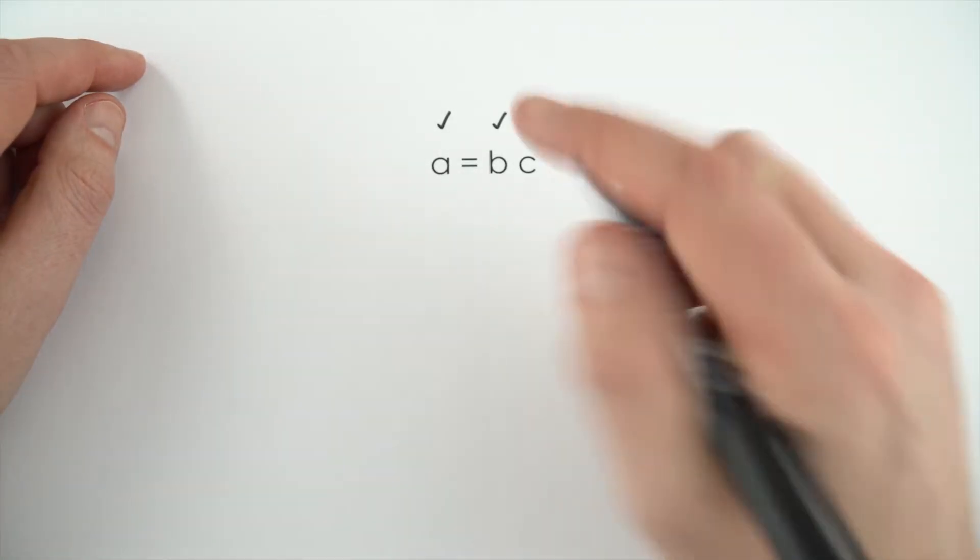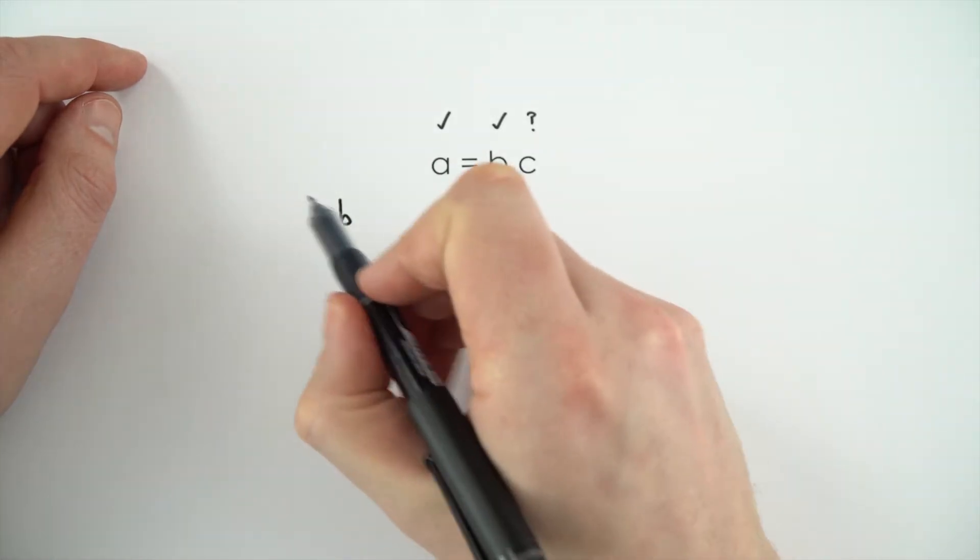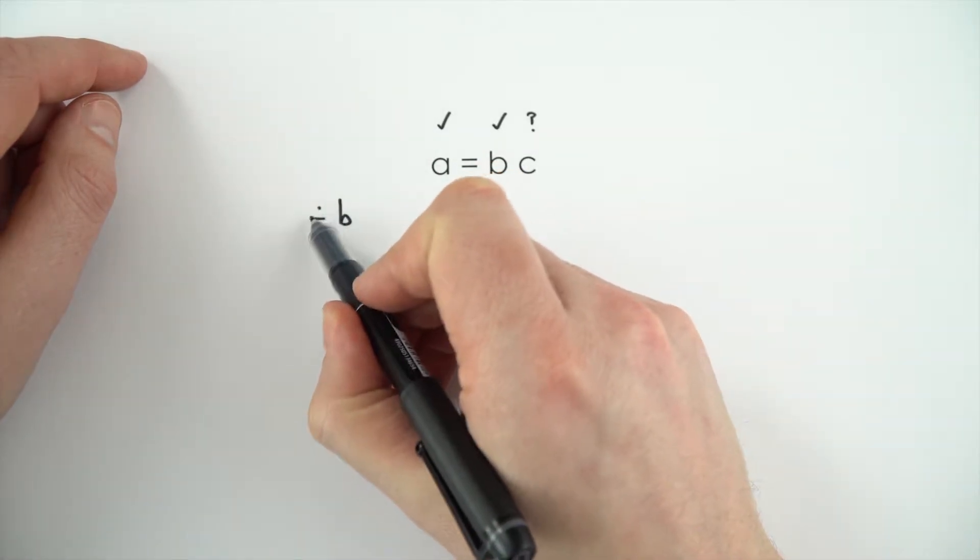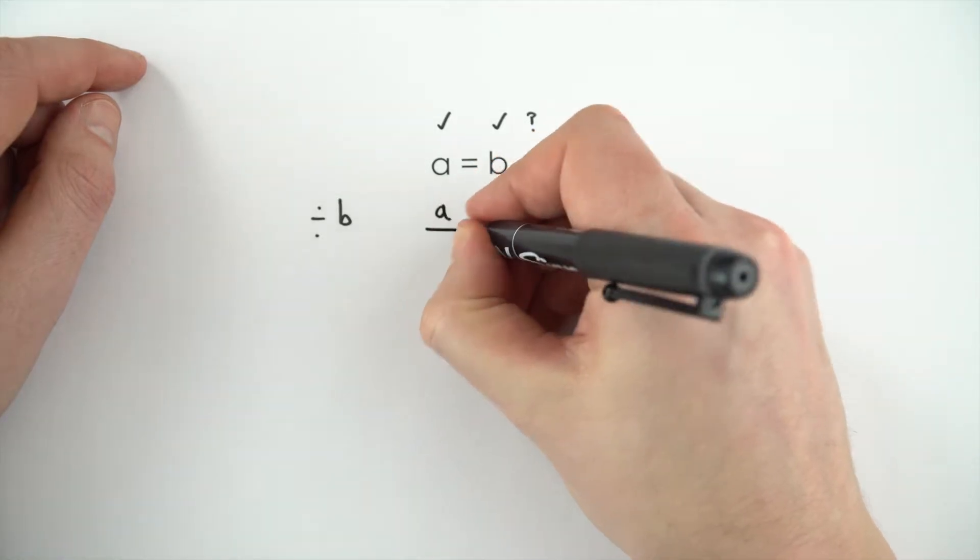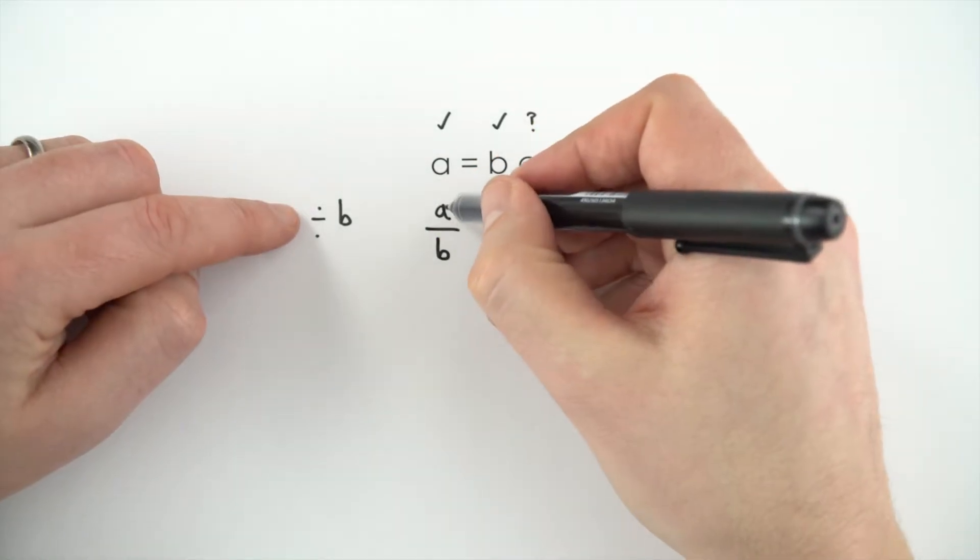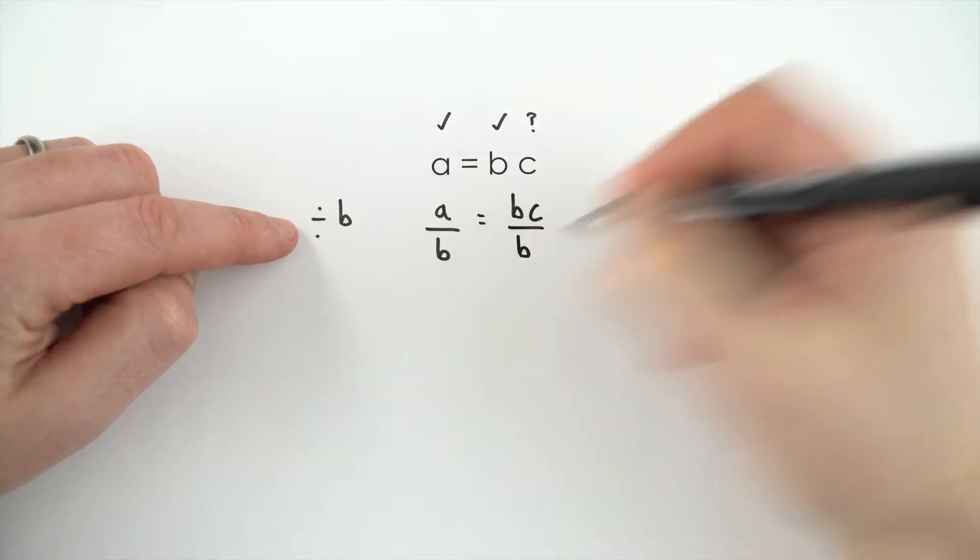So the first thing we're going to do is we're going to divide everything by b. Now the divide sign, you've got like a dot over another dot, and that's the same as saying a over b. So this is just another way of writing divide, and that's then equal to bc divided by b.